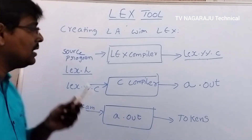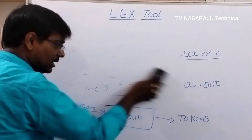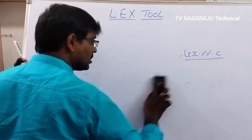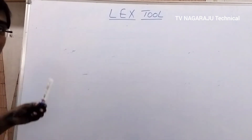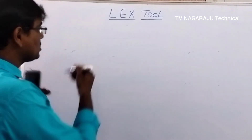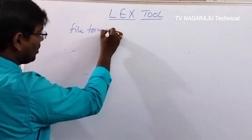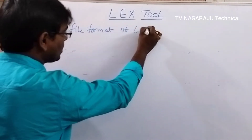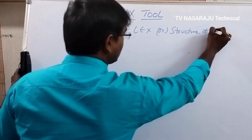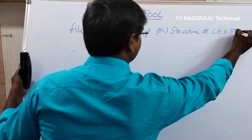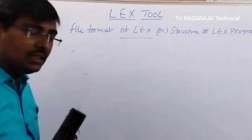Now we will move to the file format of Lex, or simply the structure of a Lex program. Suppose we are writing a C program — it starts with preprocessor directives, global declarations, main, and so on. In the same fashion, Lex language also follows some structure. The Lex program contains mainly three sections.